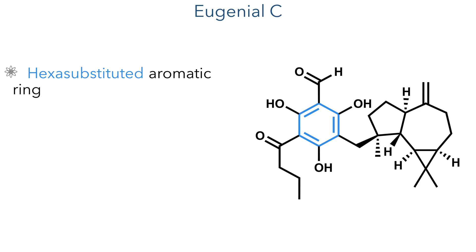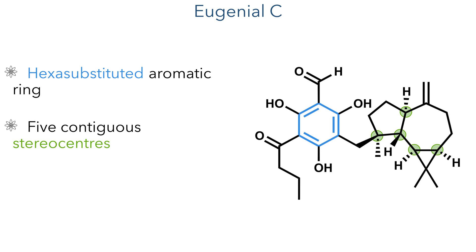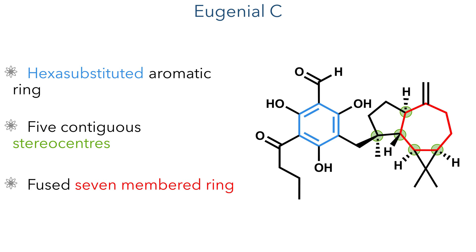Eugenial C has quite an interesting structure, consisting of two different parts. One side of the molecule is a highly oxidized hexa-substituted aromatic ring, while the other is an aromadendrane containing five contiguous stereocenters and a fused seven-membered ring. These two fragments are joined together at a chiral quaternary carbon centre, adding further difficulty to the already complex structure.